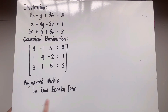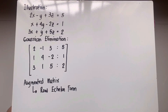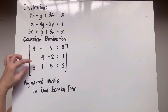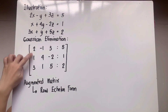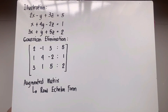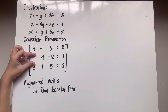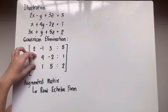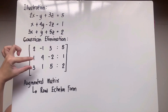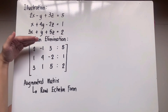What does row echelon form mean? In row echelon form, they have what are called leading entries — the first non-zero entry in each row. So these are non-zero entries which come first in every row. For the first row, the first non-zero is 2. The second row, the first non-zero is 1. The third row, the first non-zero is 3. So 2, 1, and 3 are the leading entries or leading coefficients in this augmented matrix.